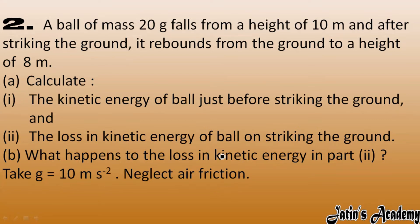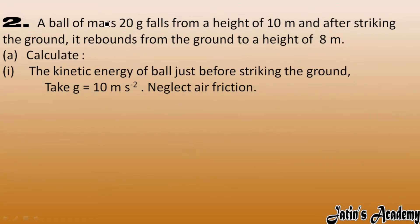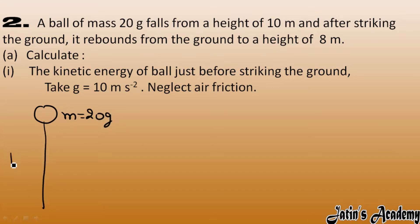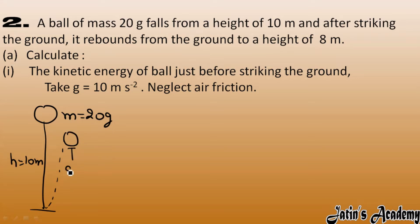Now carefully read the question. A ball of mass 20 gram falls from a height of 10 meter from the ground. After striking the ground, it rebounds to a height of 8 meter. We have to calculate the kinetic energy of the ball just before striking the ground.